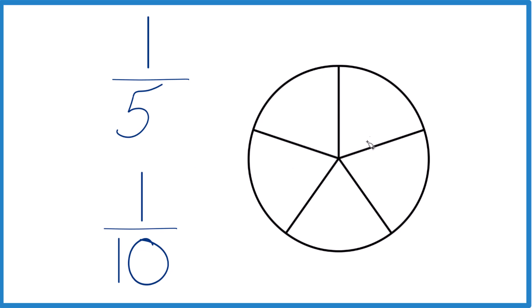But to make this into one-tenth, we need ten even pieces. So like this here. So now if we take one piece, that's one-tenth. And you can see that one-tenth is going to be a lot smaller than one-fifth. It's going to be half as big as one-fifth.